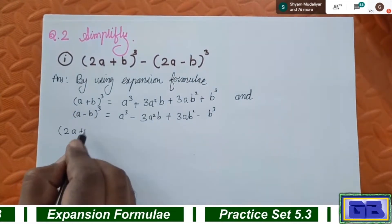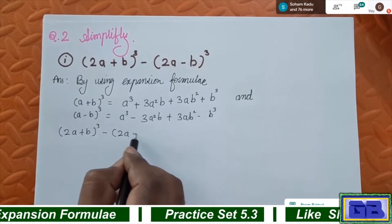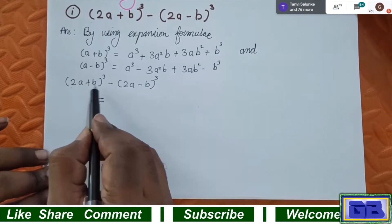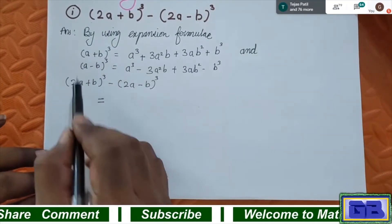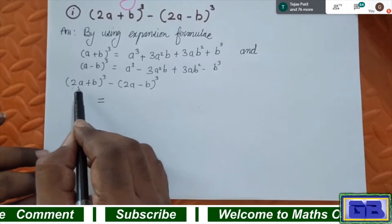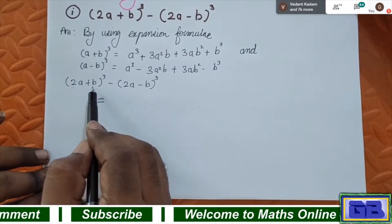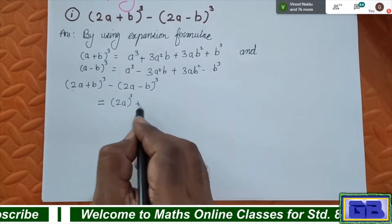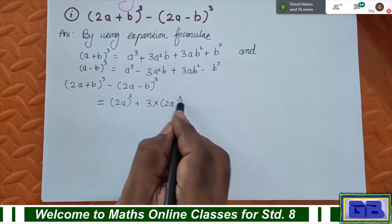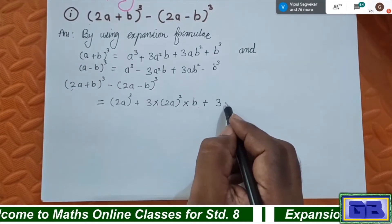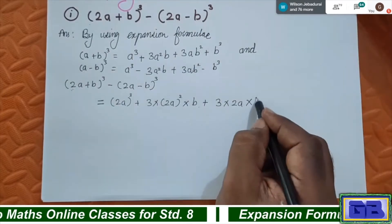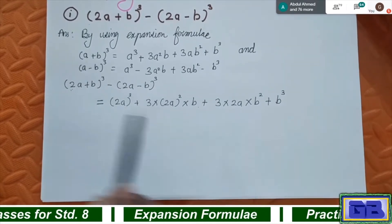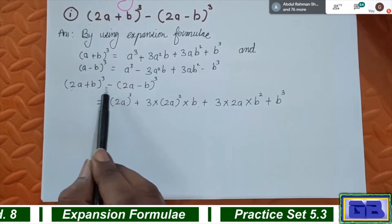Take the question down: (2a + b)³ - (2a - b)³. Put equal sign here. For the first bracket, a equals 2a and b equals b as it is. So a³ is (2a)³, plus 3 × (2a)² × b, plus 3 × 2a × b², plus b³. This is the expansion of the first bracket.